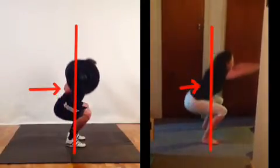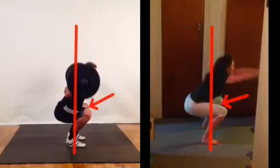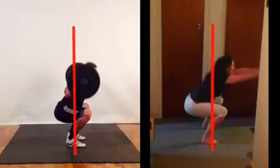The vastus lateralis, vastus intermedius, and vastus medialis would also be eccentrically activating to control the knee flexion. Hip stability is important in this phase as the hips cannot be allowed to move unnecessarily to one side or the other. Hip stabilizers will activate, primarily isometrically, to maintain a slight anterior tilt to the pelvis.